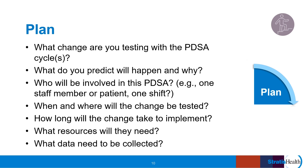During the plan stage, teams address the following questions: What change are you testing with the PDSA cycle? What do you predict will happen, and why? Predictions are important because you are testing a theory with the PDSA cycle. Teams will also address who will be involved — for example, one staff member or customer or patient, one time, or for one shift or one day. The key is starting with small-scale tests. This doesn't mean you can't test a big change, but rather it means to start testing on a small scale to learn from it through subsequent PDSA cycles before implementing more broadly. Teams will plan when and where the change will be tested, how long it will take, what resources will be needed, and what data will need to be collected to understand if the change was implemented as intended and how it worked — whether it had the intended impact and whether there were any concerns or barriers.